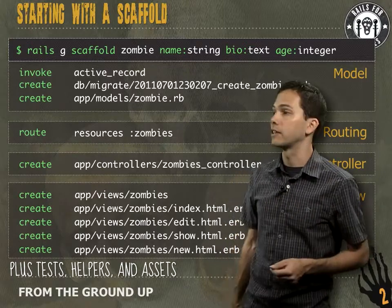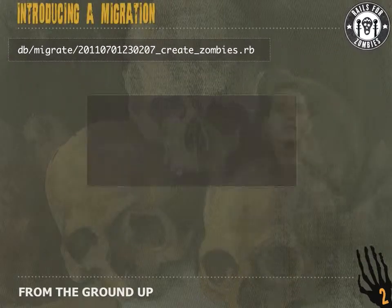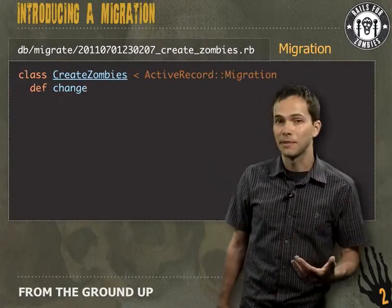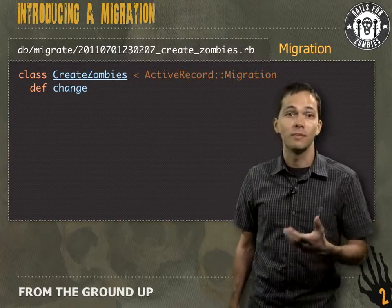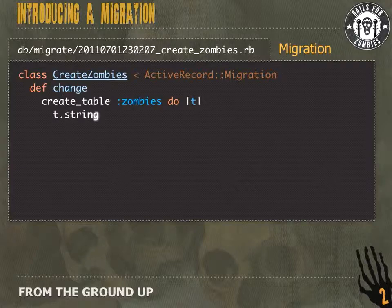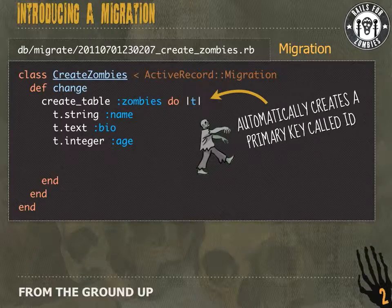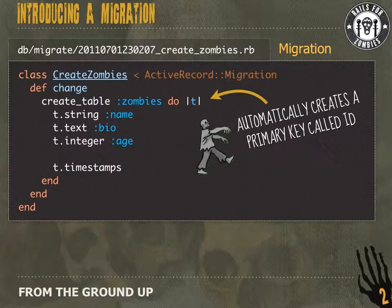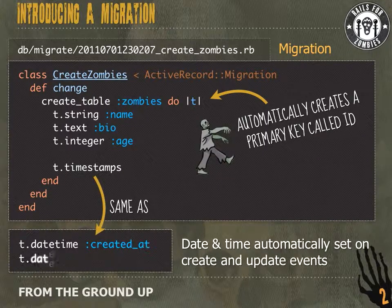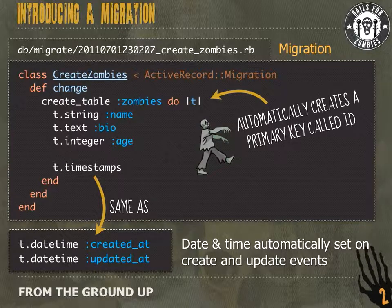Let's jump in and take a closer look at that migration. When we say migration, we're talking about database migrations — this is how we make changes to our database from inside Rails. Rails is going to automatically create a primary key called ID; it doesn't even show that in the migration, it's just assumed every table will have an ID. The last thing you'll see is `t.timestamps`, which is the same as saying `datetime :created_at` and `datetime :updated_at`. These are magical fields — they get populated automatically. When a model is created, `created_at` gets set, and every time it's updated, `updated_at` gets set.